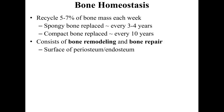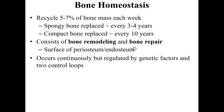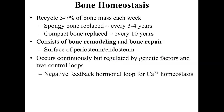Bone remodeling occurs at the periosteum and endosteum surfaces, continuously regulated by genetic factors and two control loops. With negative feedback control, the response always goes in the opposite direction of what's occurring — for example, if you're getting too hot, negative feedback cools you down, and vice versa. This creates a negative feedback hormonal loop for calcium homeostasis.